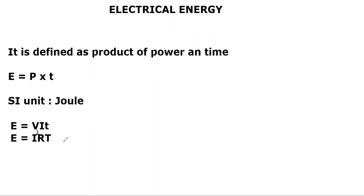The third formula of electrical energy is E = V²t/R. You can remember these by recalling the power formulas and multiplying by time: power is VI so energy is VIt; power is I²R so energy is I²Rt; power is V²/R so energy is V²t/R. Just like power, electrical energy also has four formulas — you just multiply each power formula by time.